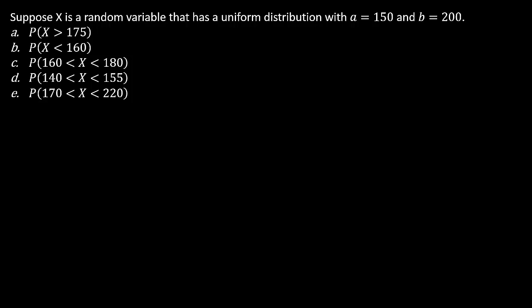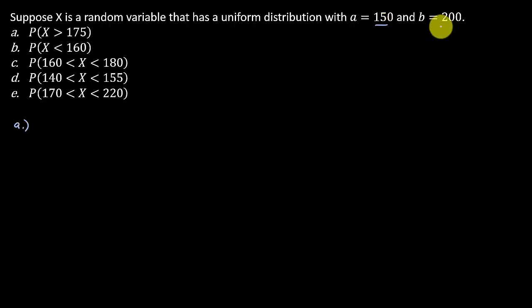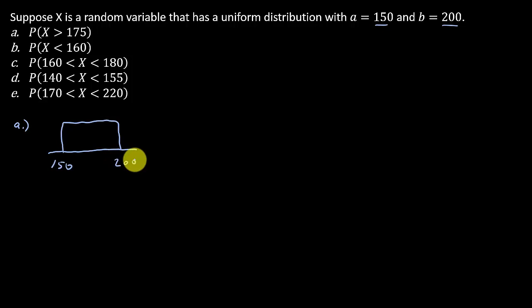Suppose X is a random variable that has a uniform distribution with A equals 150 and B equals 200. So 150 is the minimum value that X can take on and 200 is the maximum value. I recommend whenever you're doing these problems, draw the picture — it makes everything much easier.